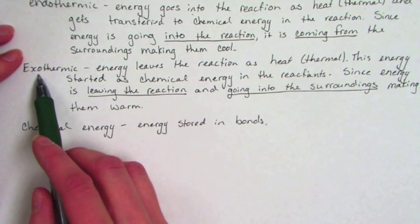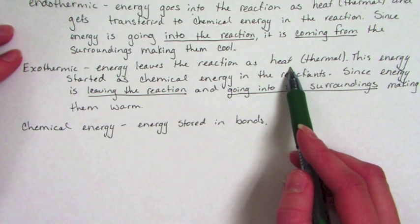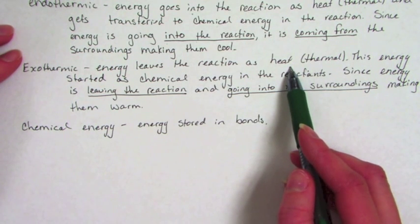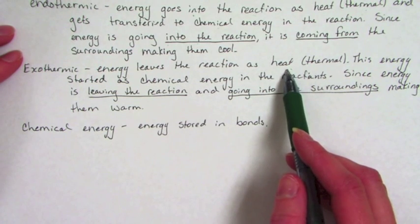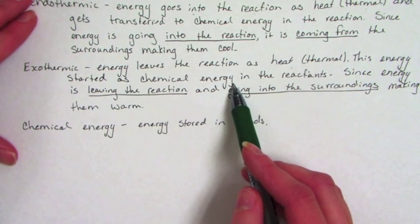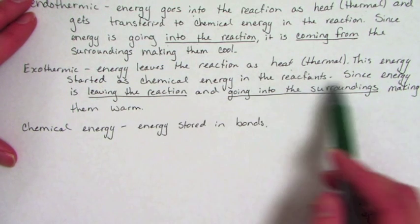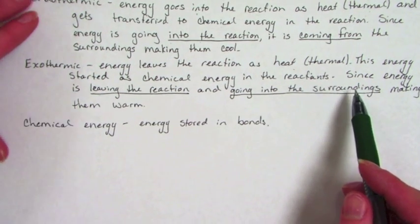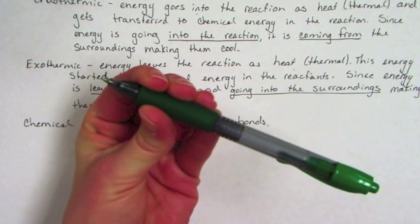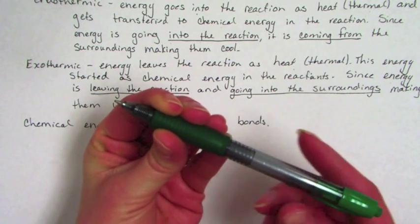In an exothermic reaction, energy leaves the reaction as heat. The most common example is a combustion reaction — lighting wood on fire. The reaction between the wood and oxygen produces a lot of heat. This energy is stored as chemical energy in the wood, in the bonds. As it reacts with oxygen to make CO2 and water, the energy leaves the reaction and goes into the surroundings. If you hold a test tube or beaker with an exothermic reaction, it gets warm because the energy leaves the reaction and goes into your hands.